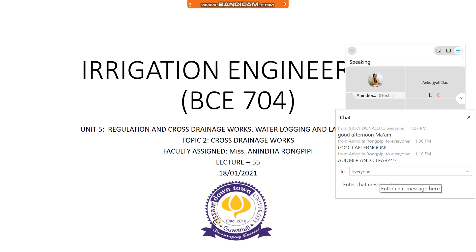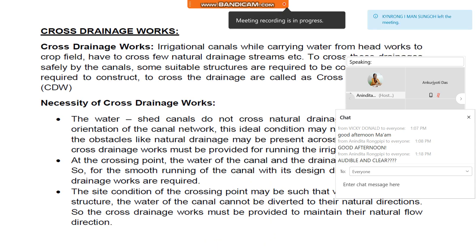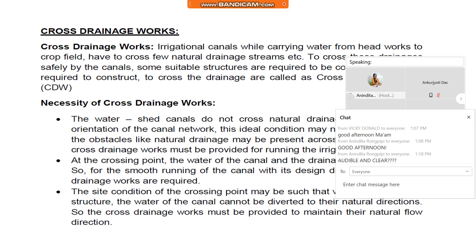Hello students. We'll continue again with topic number two, that is cross drainage works. Cross drainage works — irrigation canals while carrying water from head works to crop fields have to cross a few natural drainage streams.